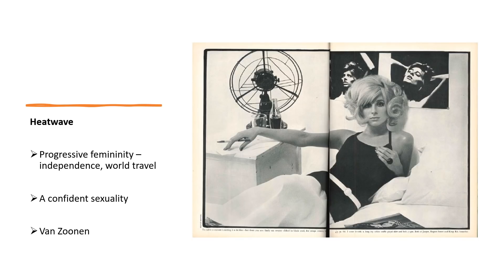Finally, the Heatwave section presents a progressive vision of femininity — this article is about a woman's independence and ability to travel the world. There is also a confidence in her own sexuality, a sense that she is owning it and is empowered through it. But Van Zoonen might again argue that she is sexualised in a way the male body would not be. That's a quick look at the way media language creates meaning and promotes viewpoints and ideologies in the Big Issue and Vogue, hopefully allowing you to go back to both set texts and apply this analysis to other pages and images.